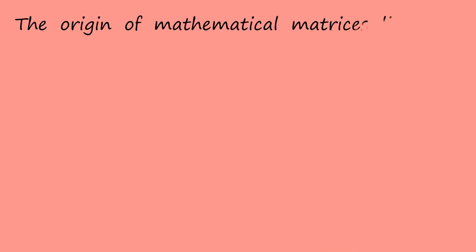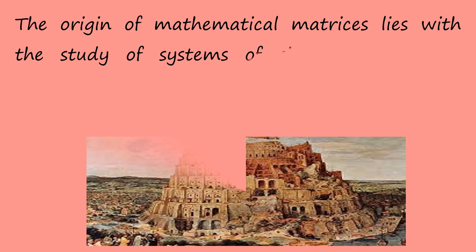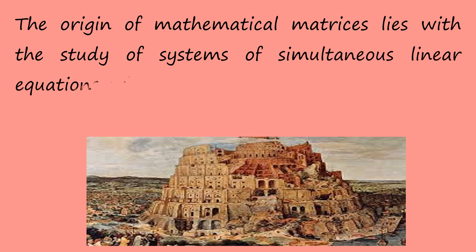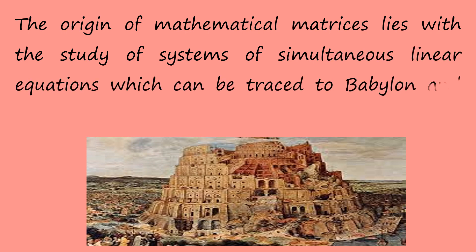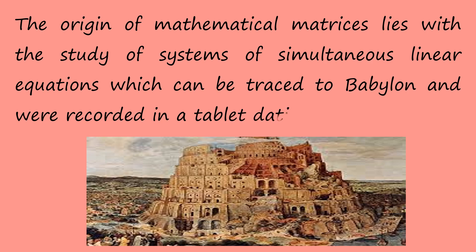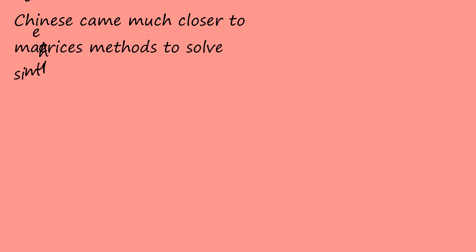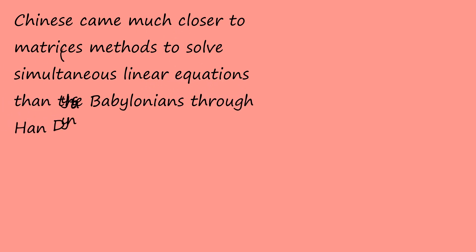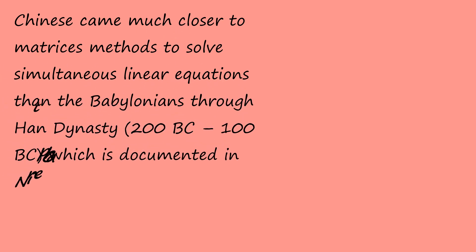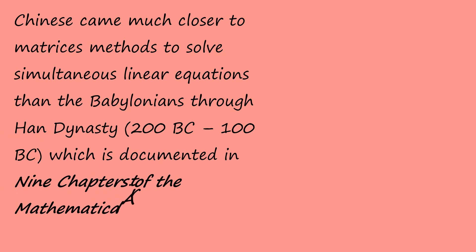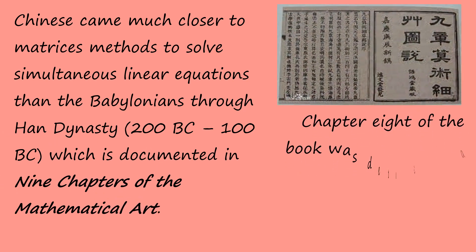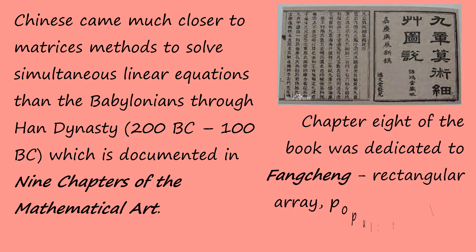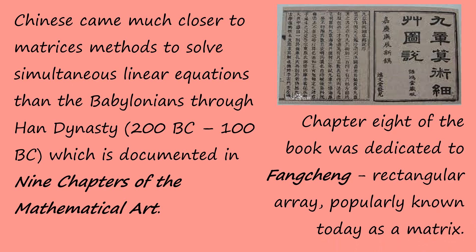The origin of mathematical matrices lies with the study of systems of simultaneous linear equations, which can be traced to Babylon and were recorded in a tablet dating 300 BC. The Chinese came much closer to a matrices method to solve simultaneous linear equations than the Babylonians in the Zhou dynasty, which is documented in the Nine Chapters of the Mathematical Arts. Chapter 8 of the book was dedicated to Fancheng, which is popularly known as matrix.